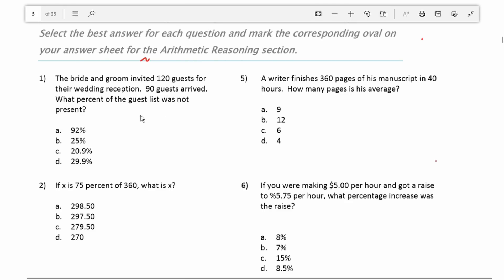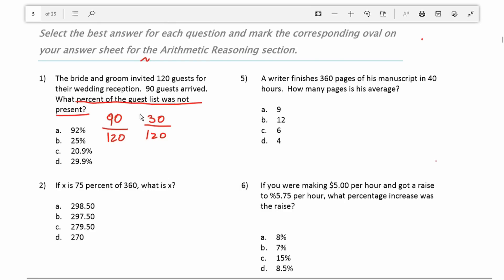Question one: the bride and groom invited 120 guests for their wedding reception. 90 guests arrived. What percentage of the guest list was not present? We know 90 out of 120 arrived, which means 30 out of 120 did not show up, and we're asked to find what percent of the guest list was not present. To do that, we're going to work with this fraction and reduce it to a percent.